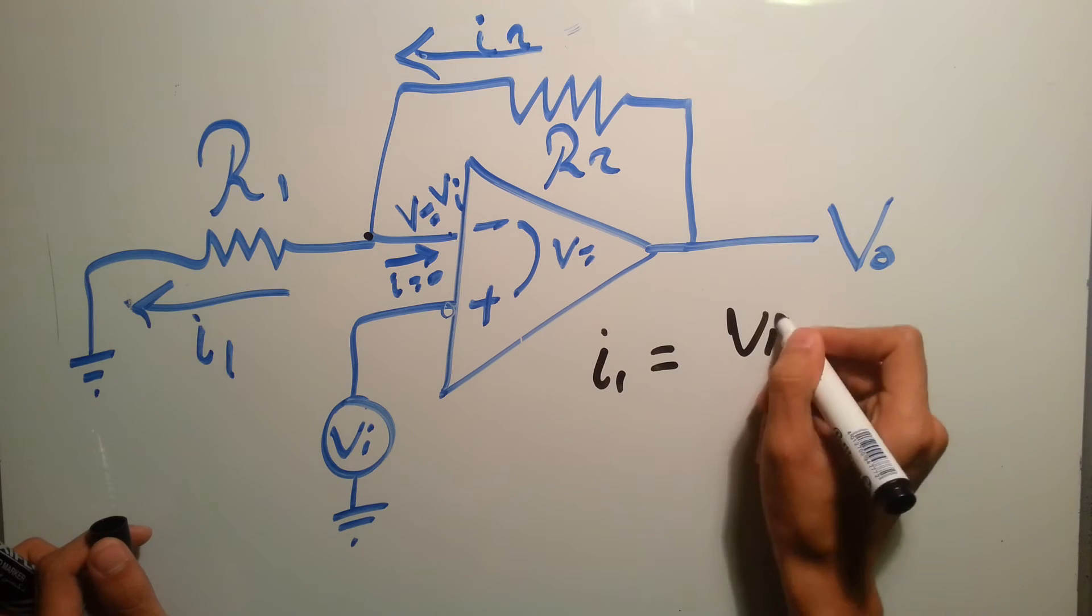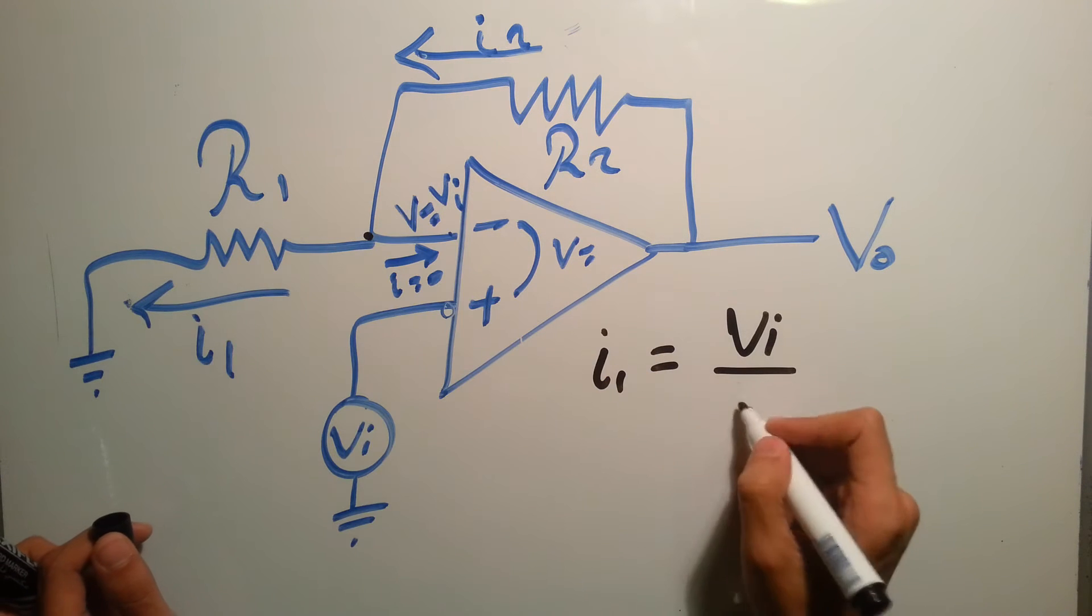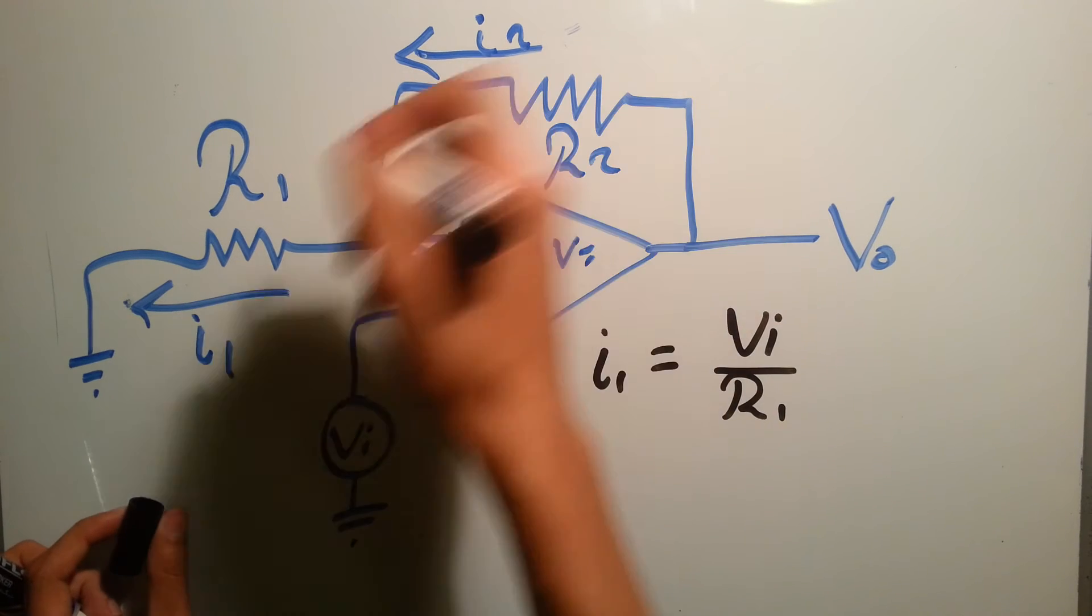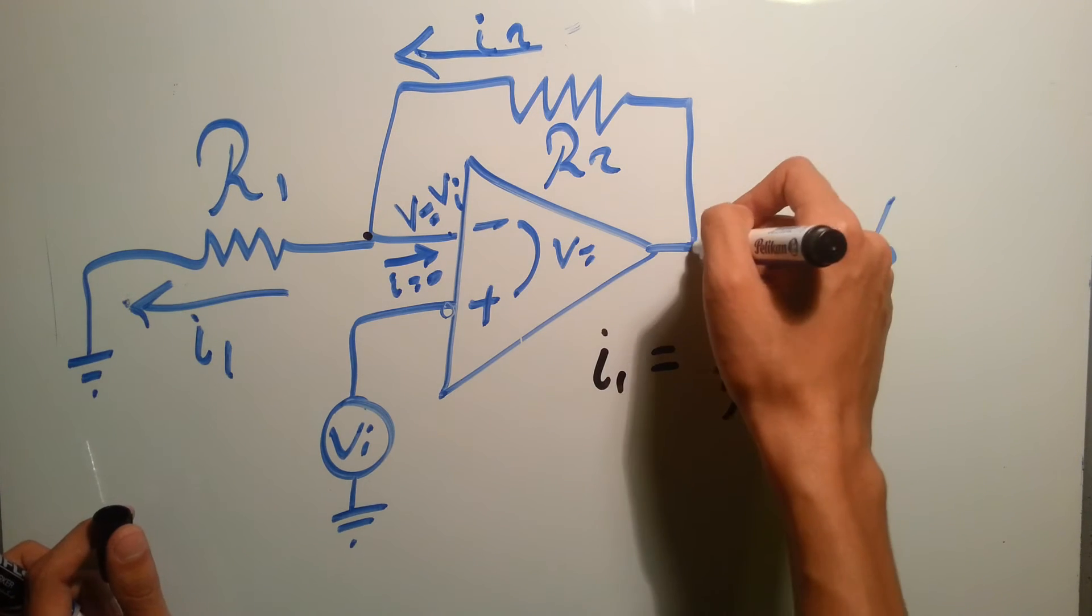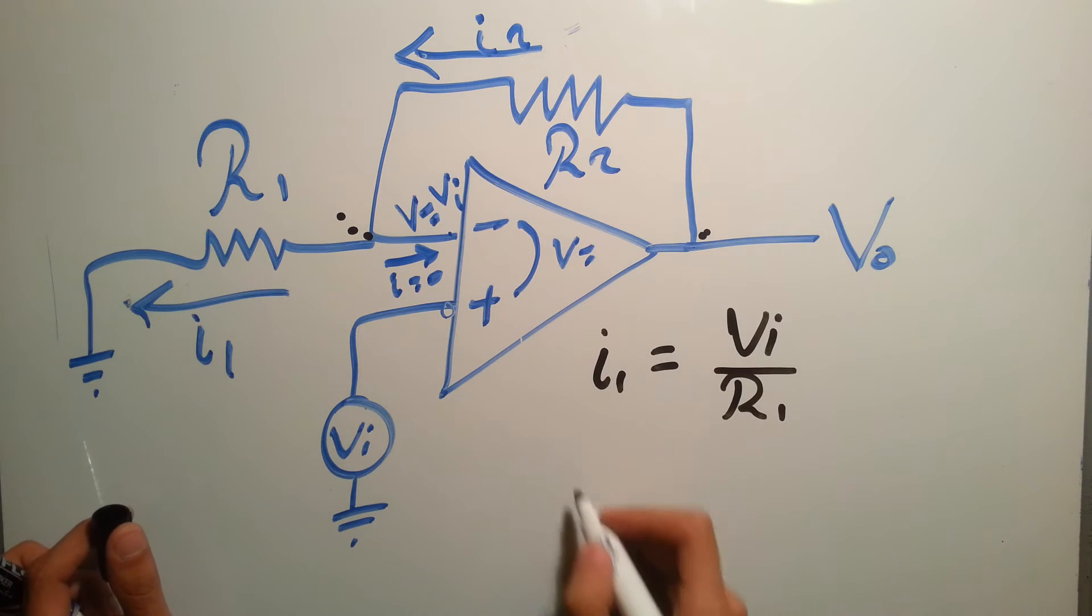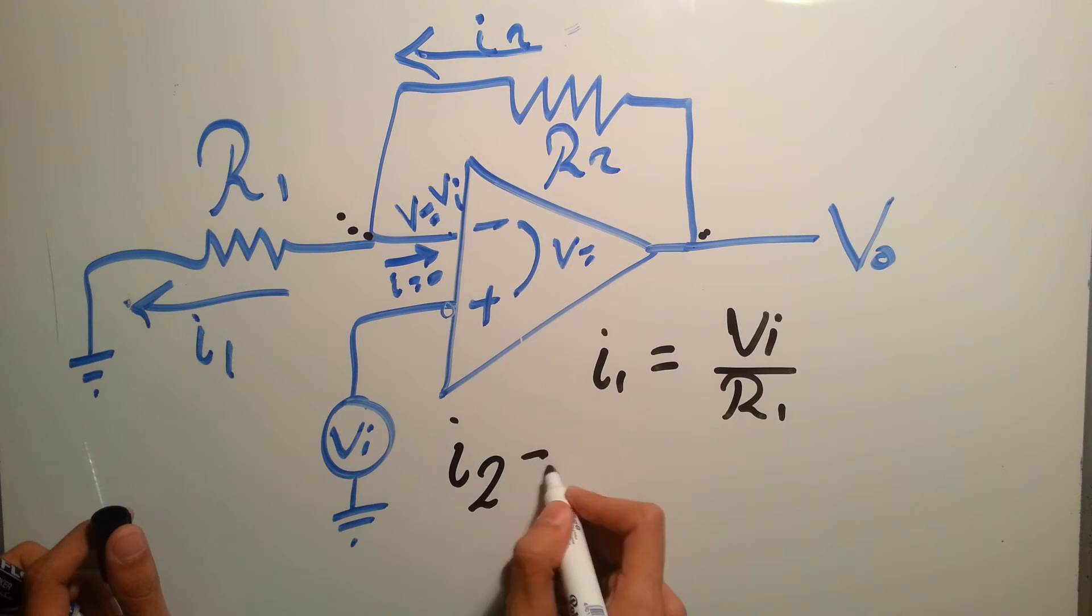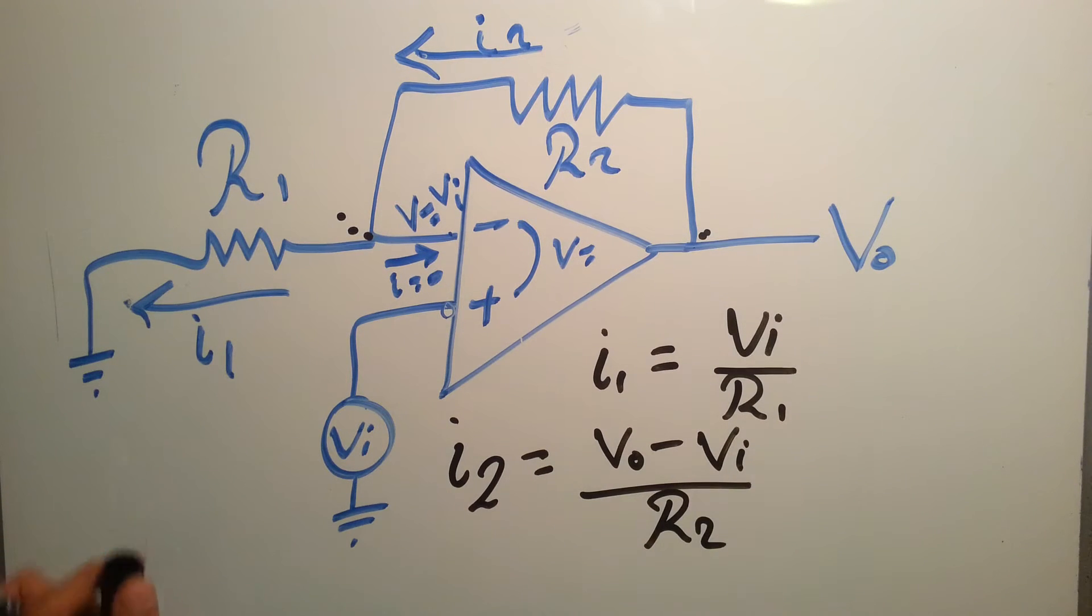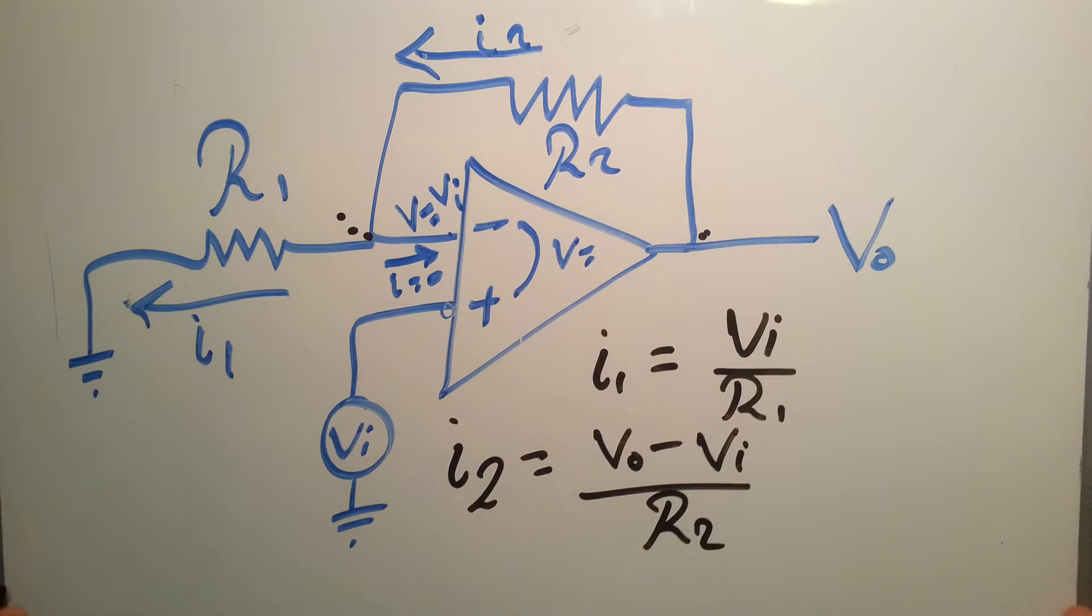And since we said that, what does I2 equal? I2 equals V output minus V input over R2. So we said that both of them are equal.